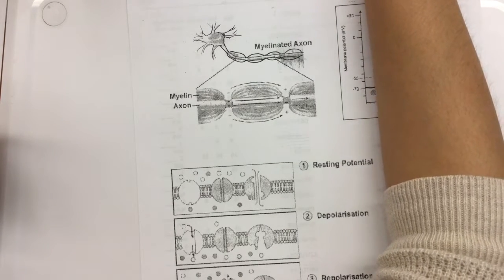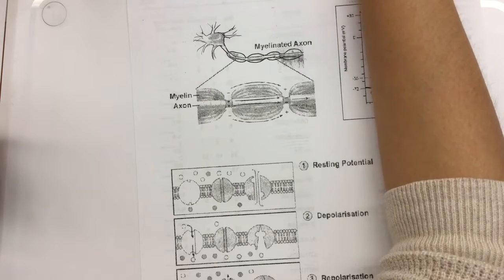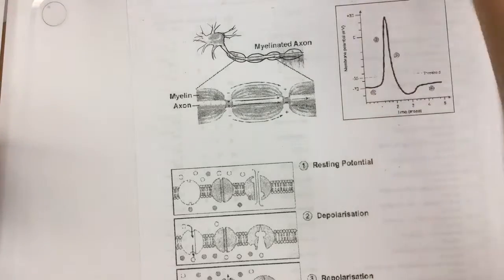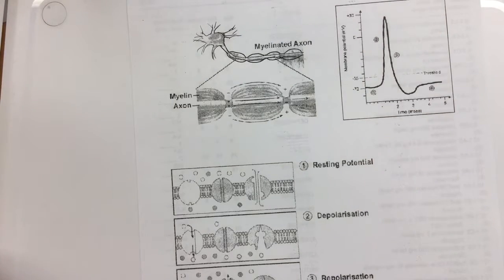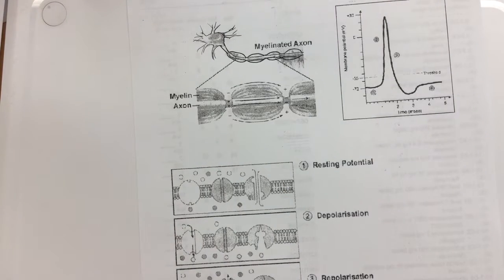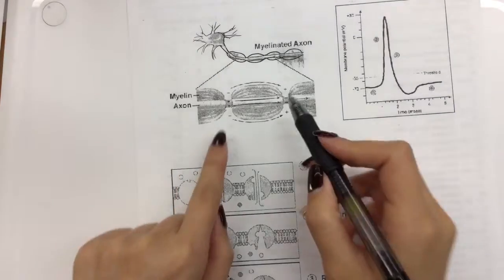Can you figure out what do we call these little gaps where you don't have any myelin covering the axon? Nodes of Ranvier. Can you attempt to pronounce what do we call these little gaps where we don't have myelin sheath? Nodes of Ranvier. Good enough. Nodes! We're gonna call them nodes!